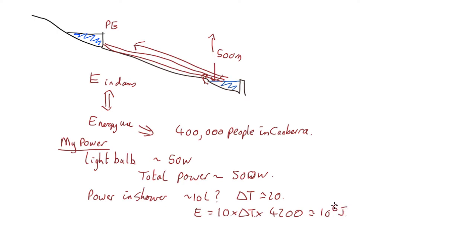We only have one shower a day, so we need to divide by 24 times 3600 for the number of seconds in a day to get an average power. So that's about 10 to the 3, 10 to the 4, 10 to the 5, so it's about 10 watts on average over the day. So you've got a whole bunch of things that are 10 to 100 watts adding all up. So I think probably about 500 watts for the average electricity consumption of a typical Australian.